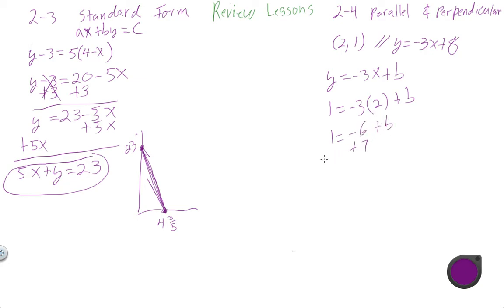1 equals negative 3 times 2 is negative 6 plus B. And we're going to add 6 to both sides. My brain was one step ahead. 6 plus 1 is 7. Negative 6, positive 6, cancel out. So B is 7. So our final equation for a parallel line would be Y equals negative 3X plus 7. And that will pass through this point 2-1.